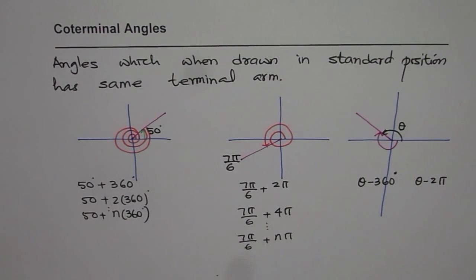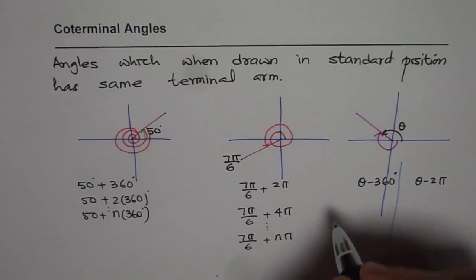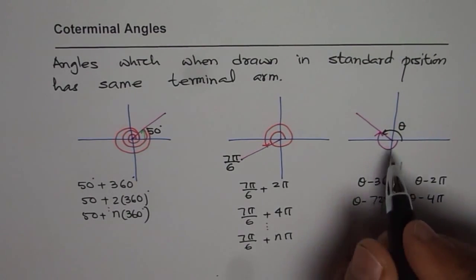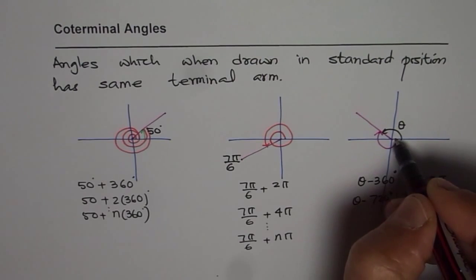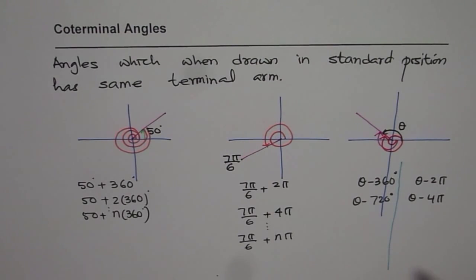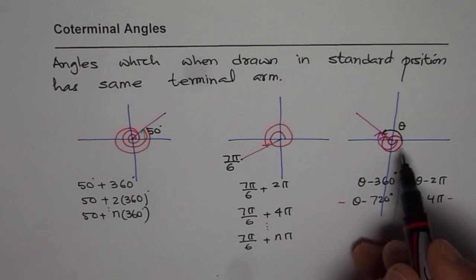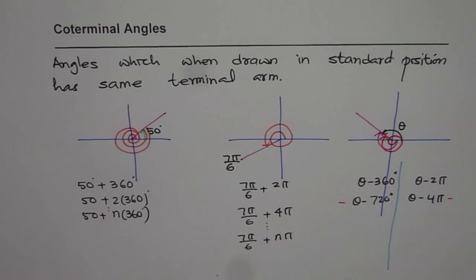So whether in degrees or radians, we can go clockwise to reach the terminal arm. For example, theta minus 720 degrees, or theta minus 4π, would be the angle reached after two clockwise circles. The terminal arm still matches, so it's co-terminal. Since the angle goes clockwise, it carries a negative sign.